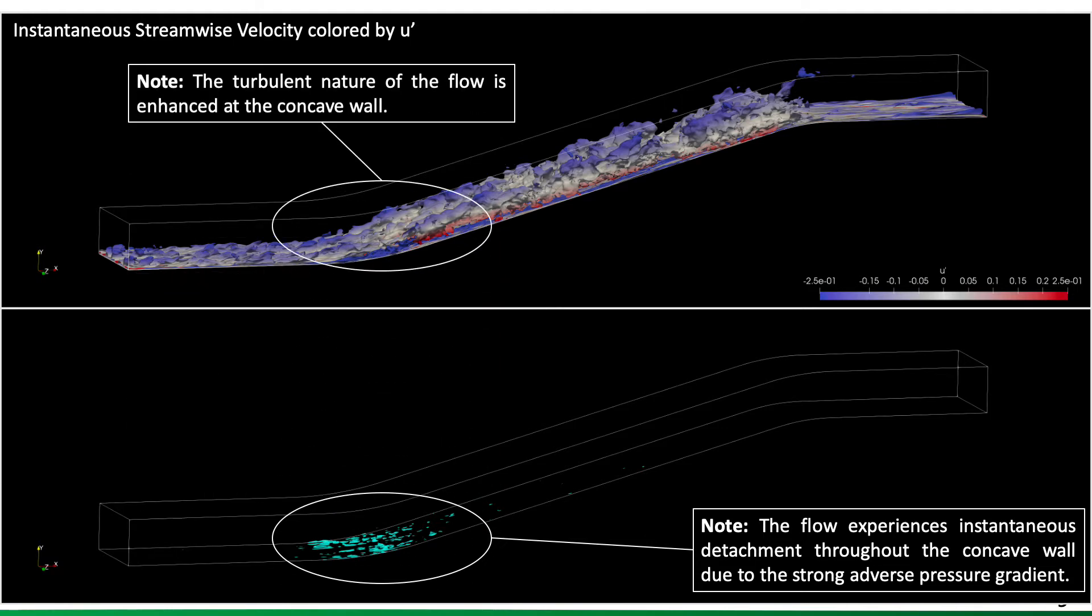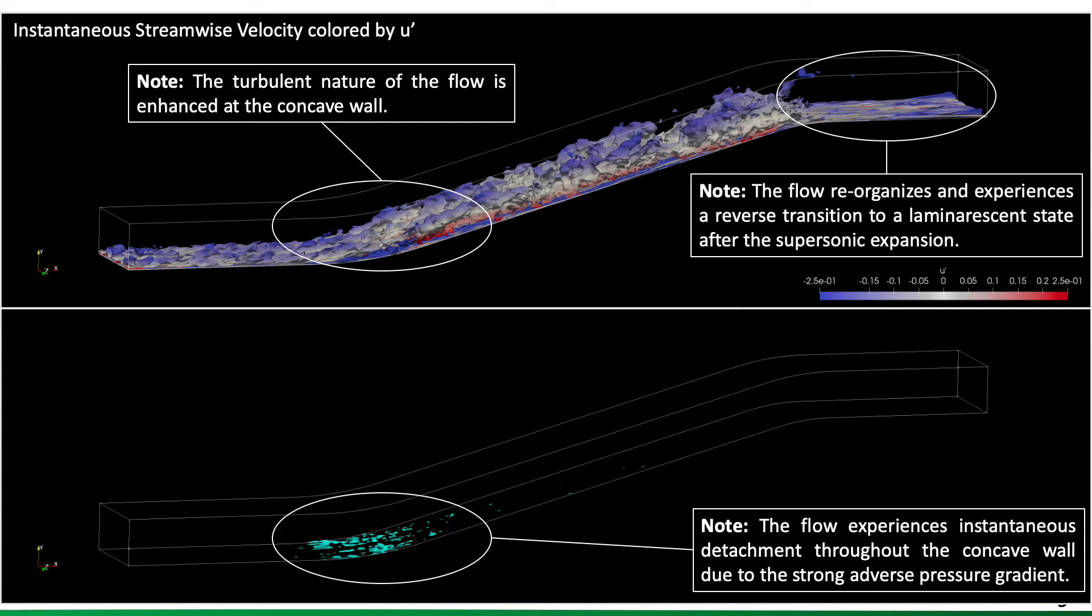There's an enhancement of the turbulent nature of the flow, due to the adverse pressure gradient imposed by the concave wall. And what could be argued to be a reverse transition or relaminarization state after the supersonic expansion towards the end.